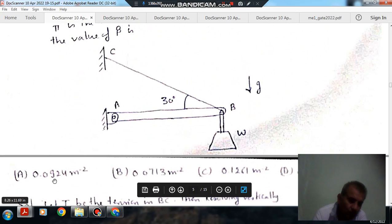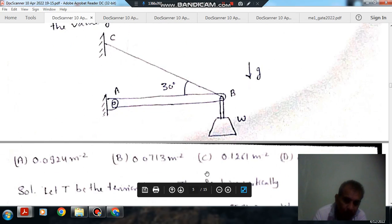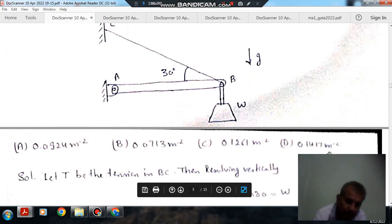This is the diagram given and the value of beta is: option A, 0.0924 meter per square, option B, 0.07713 meter minus 2, option C, 0.1261 meter minus 2, and option D, 0.1417 meter minus 2.